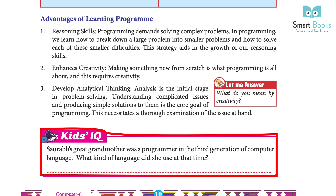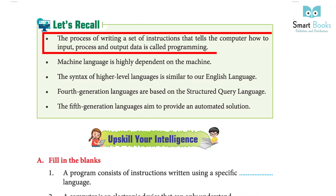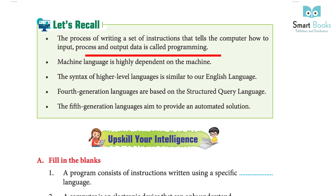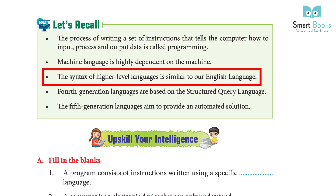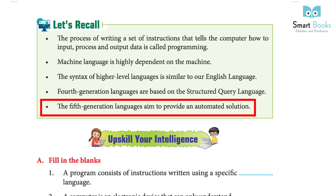Let's recall: the process of writing a set of instructions that tells the computer how to input, process, and output data is called programming. Machine language is highly dependent on the machine. The syntax of high level languages is similar to English. Fourth generation languages are based on structured query language. Fifth generation languages aim to provide an automated solution.